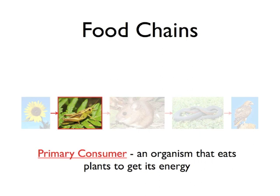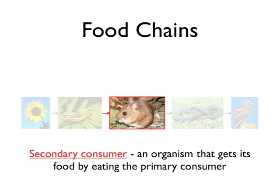Producers are then eaten by primary consumers — organisms that cannot produce their own energy, but are able to eat and digest plants. In this food chain, the grasshopper eats the sunflower. Organisms that have to obtain their energy by eating other organisms are known as heterotrophs. An organism that eats plants to obtain its energy is also known as a herbivore. The primary consumer may then be eaten by a secondary consumer, which is the animal that is able to eat other animals. In this example, the field mouse eats the grasshopper.